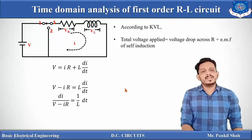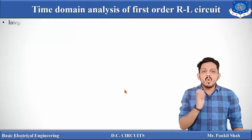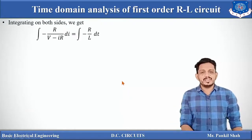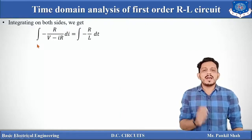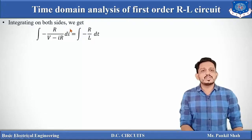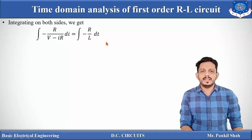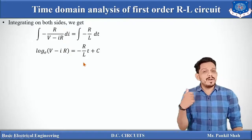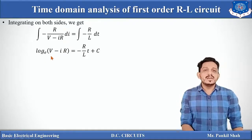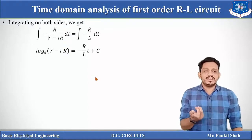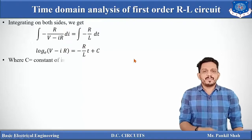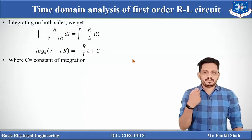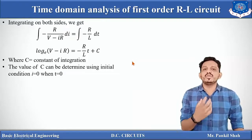Multiplying both sides by −R and integrating, the left side becomes: −R/(V − IR) di and the right side becomes −R/L dt. Integrating both sides — the left with respect to i and the right with respect to t — gives: log(V − IR) = −(R/L)t + c, where c is the constant of integration.